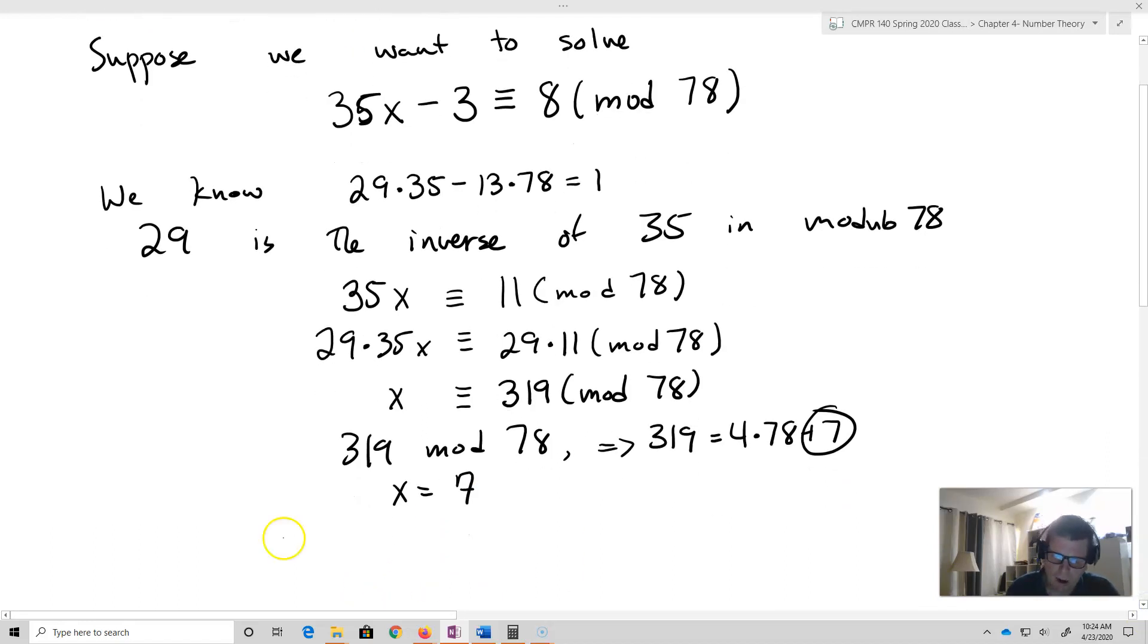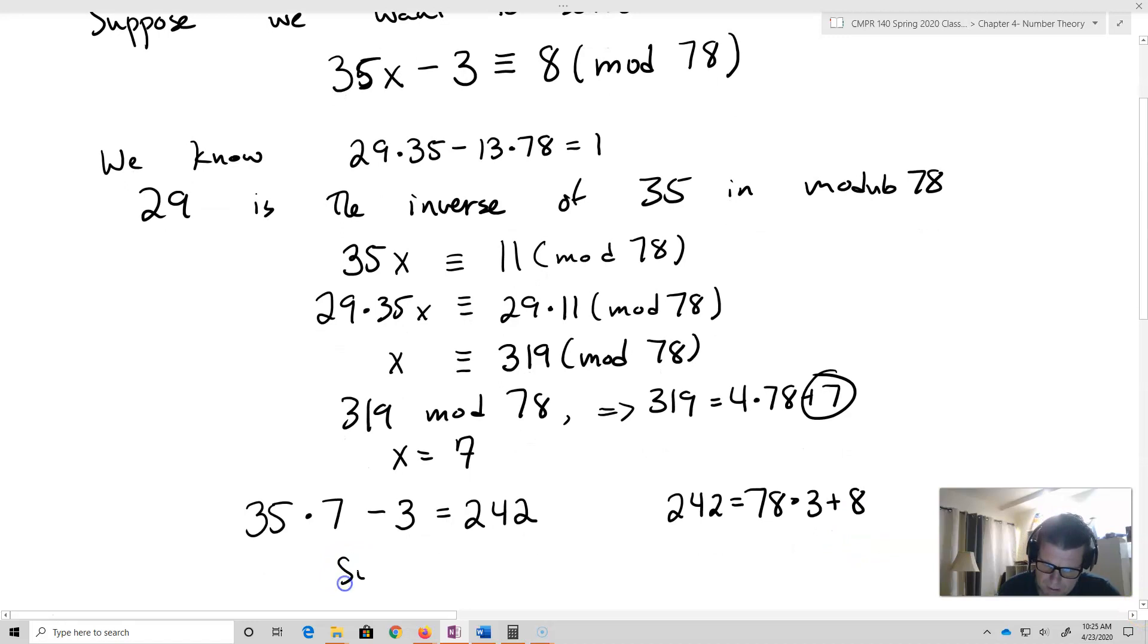Now I can in fact go and check that. I'll take 35 times 7 minus 3. That's 242. So that's going to equal 242. And when I divide that by 78, I'm going to take 242 is going to equal 78 times 3 plus 8. All right.